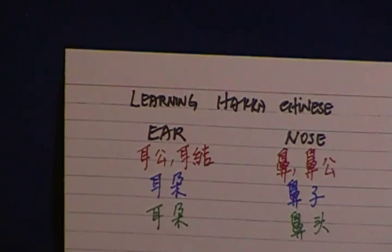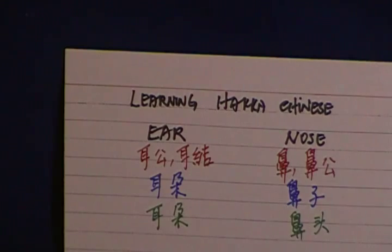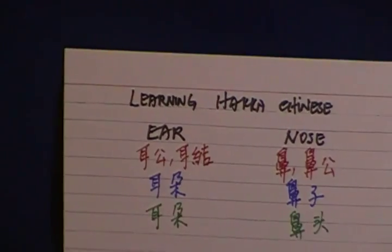I repeat it again. In Hakka Chinese is pi or pi kong. In Mandarin is bi ze. And in Shanghai dialect is ba du. Now we go to the next one.